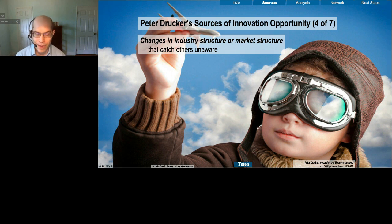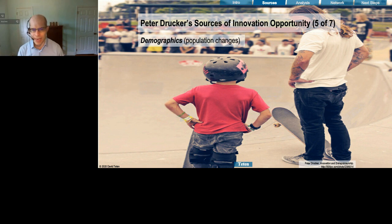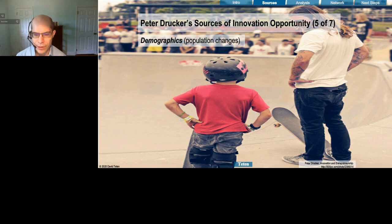Number five is demographics. The great thing about demographics is everyone who economically matters in 2040 is alive today, and you can look at their race, age, and geographic distribution to make very accurate predictions about what the future holds. For example, it's a safe prediction that Japan and much of Western Europe is going to get significantly older because they're not reproducing enough, and that has significant implications for the type of businesses you can run effectively selling to different age levels.